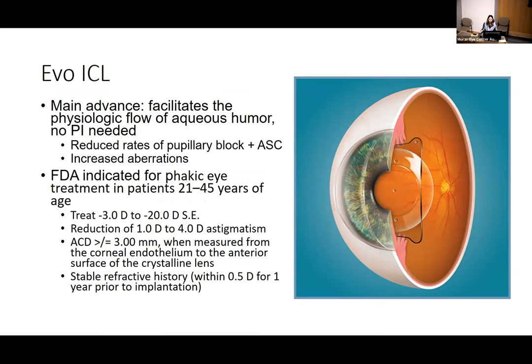The big advance of the EVO is a central pore that facilitates physiologic aqueous humor flow, eliminating the need for a peripheral iridotomy. There are actually five pores: one central, two paracentral, and one in each haptic. The central pore also creates a cushion of aqueous between the ICL and the crystalline lens, which helps prevent cataract formation. Having a central pore can introduce some increased aberrations. This lens treats minus 3 to minus 20 diopters of spherical equivalent, with one to four diopters of astigmatism for the toric version.